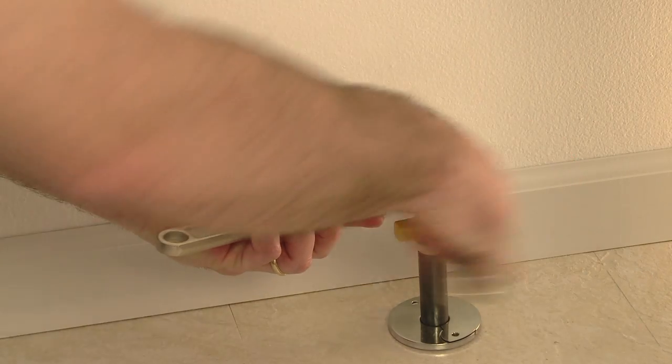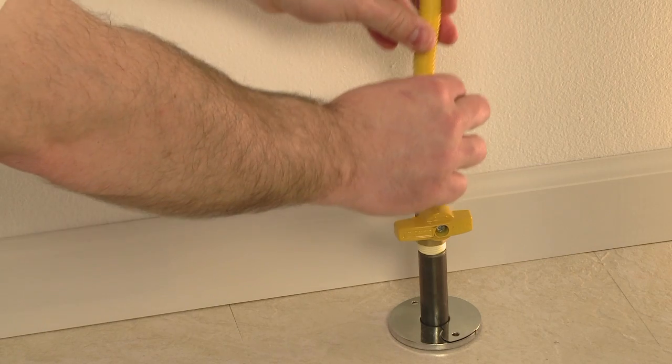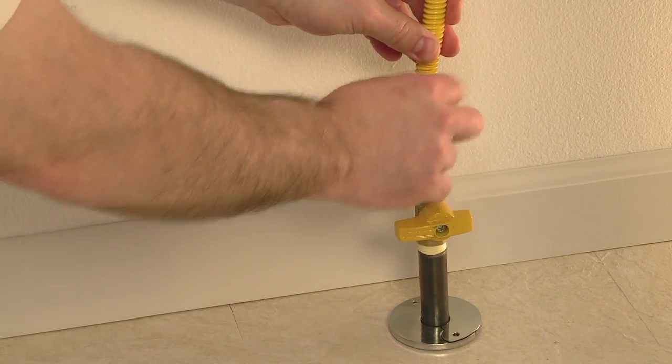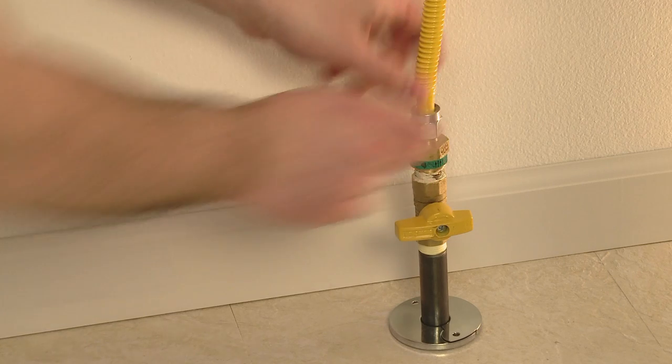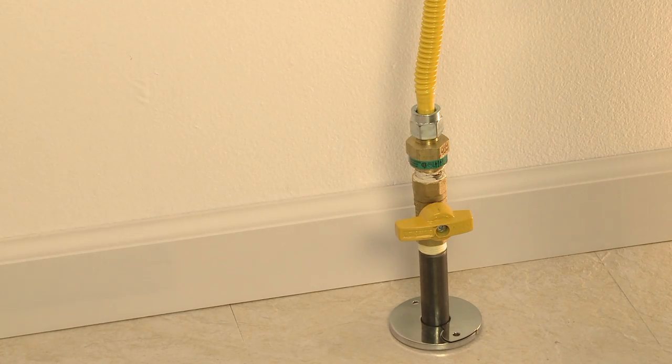Next attach the appliance connector to the excess flow valve. Here the connection between the appliance itself and the connector has already been completed. Follow manufacturer's instructions for direct installation to the appliance.